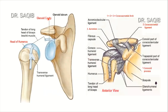Here you can see all these structures. The glenoid labrum is a very strong support to the shoulder joint — you can refer to my first video on normal shoulder joint anatomy for details. It is attached to the margins of the glenoid fossa and glenoid cavity. You can also see the various ligaments and the canopy of the coracoacromial arch. This arch is formed by the coracoid process, the acromion, and the coracoacromial ligament — these three form the coracoacromial arch.